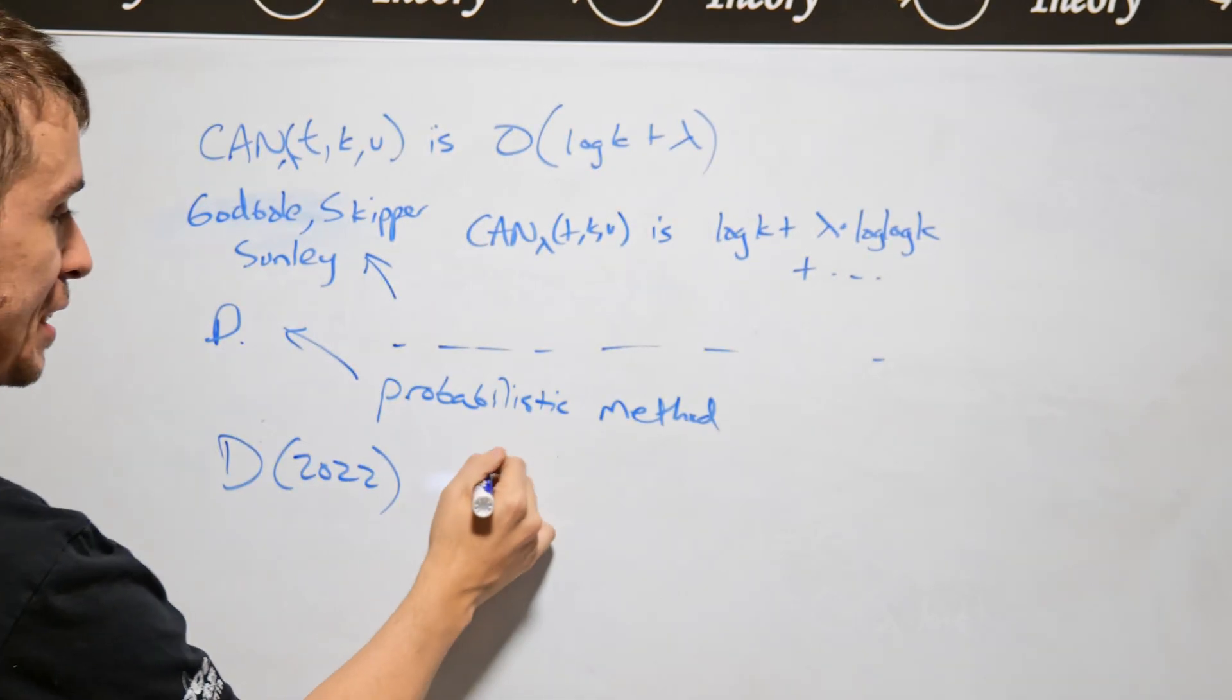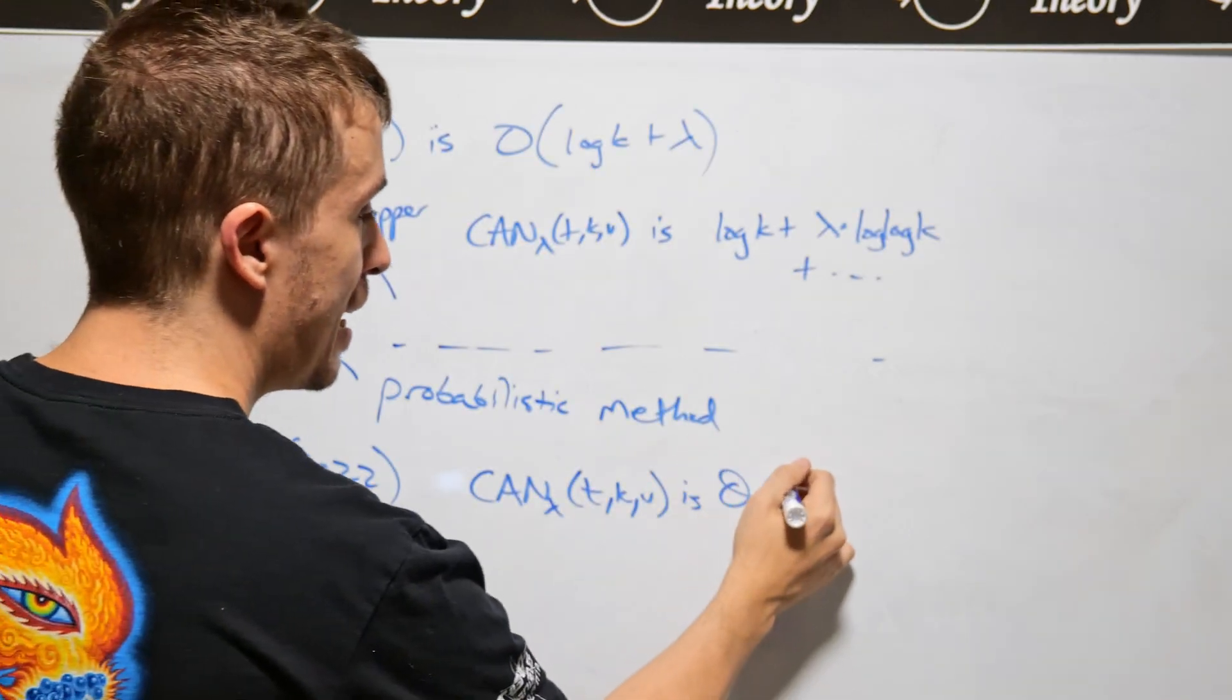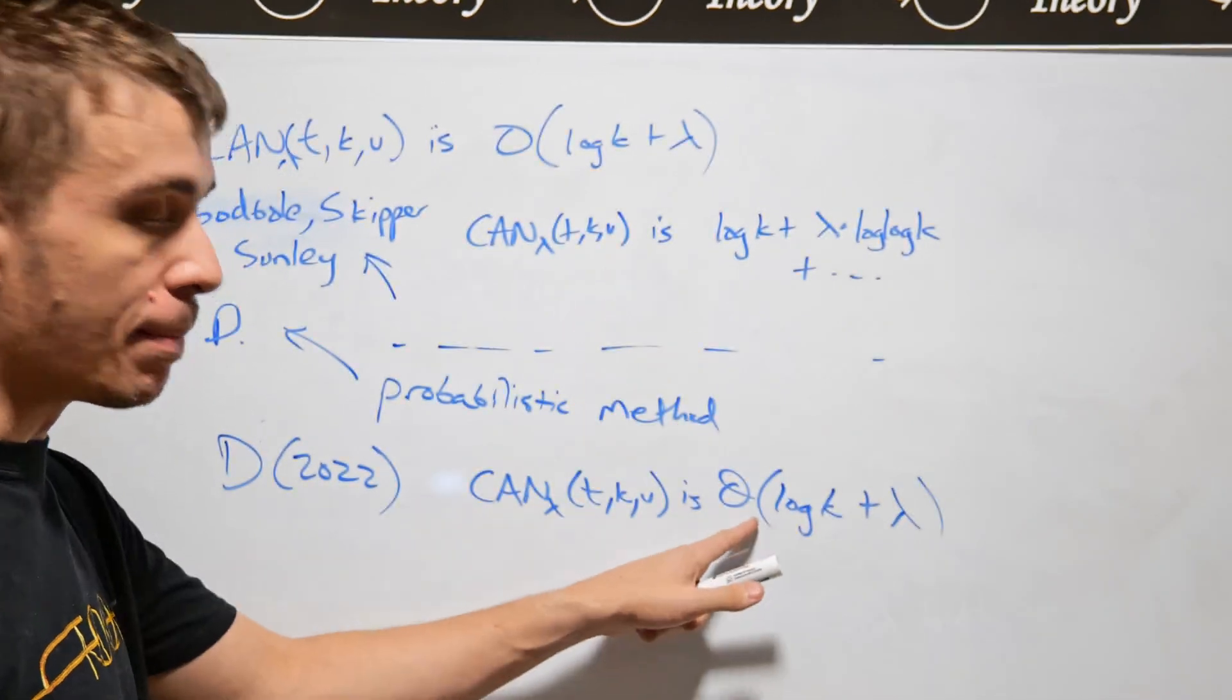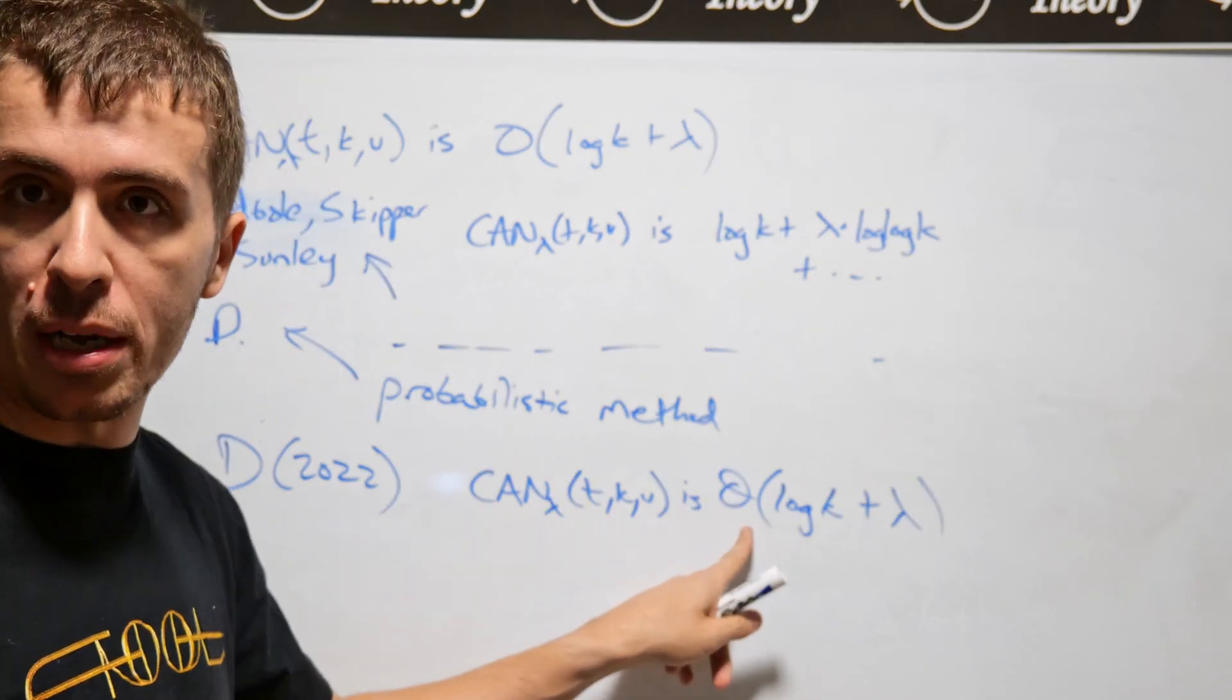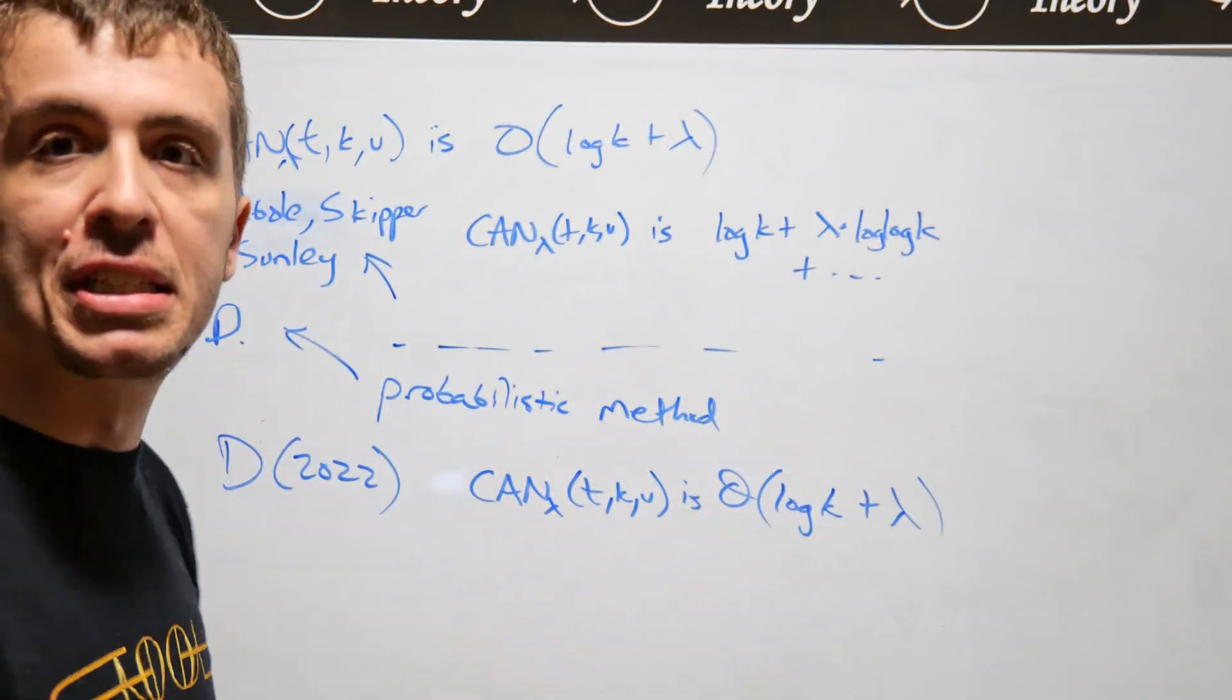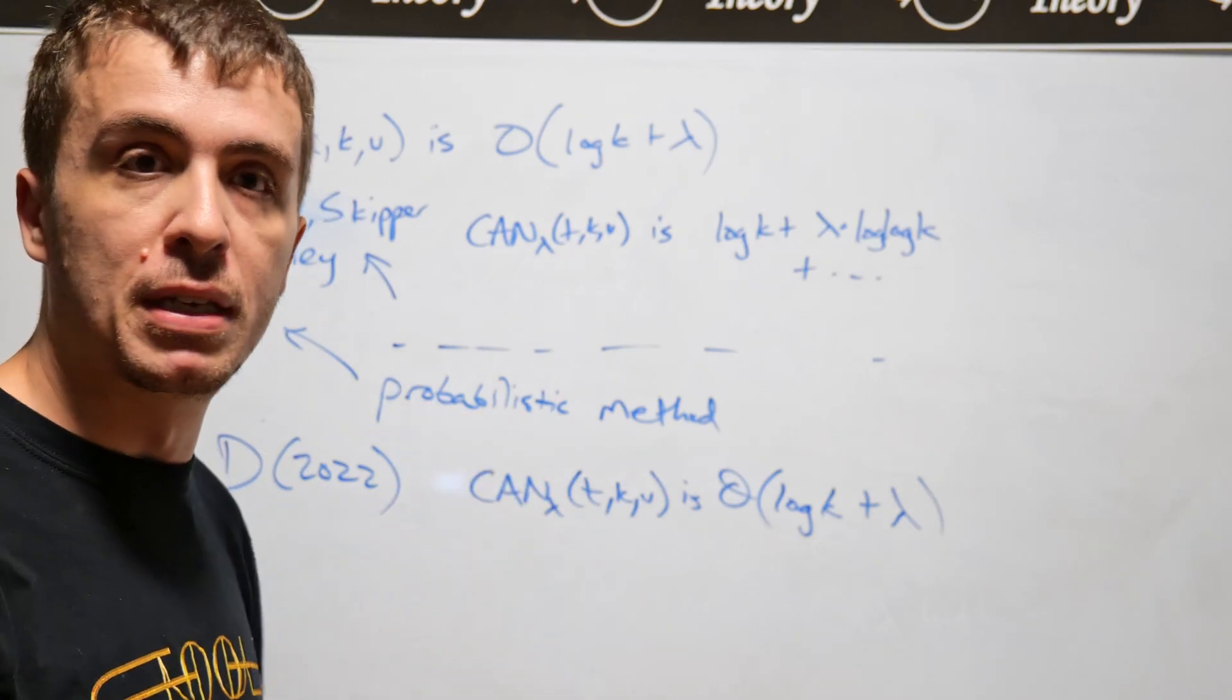So what I showed this year is that covering array number lambda t k v is logarithmic in k plus lambda. And we showed before that it must be at least that number, and what I'm going to show here is that it's at most that number, so therefore this is asymptotically tight. There's no way to improve this without improving the v t parameters. And in every case here, v and t are held as constants. So let me give you some intuition as to how you can actually prove this.